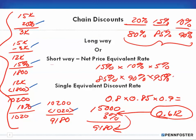Multiplying 0.85 × 0.90 × 0.95 gives approximately 0.727, which is the net price equivalent rate. You multiply that against your retail figure to get the final dollar amount after all discounts. The single equivalent discount rate would then be 100% − 72.27% = 27.73%. I hope you understood that, and with that I'll move on to the next video.